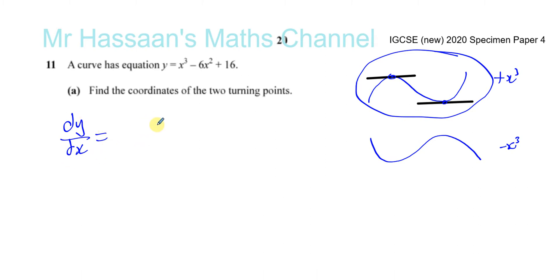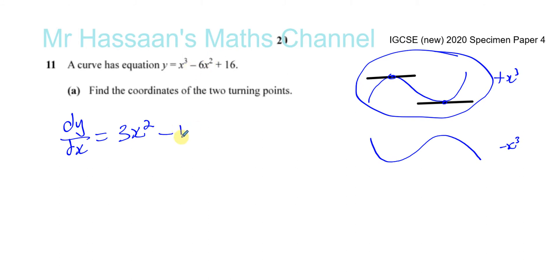When you differentiate a function, you take the power and multiply by it first. So it's three times whatever number is in front of the x — three times one gives three. You write down the x and take one from the power, so instead of three it becomes two: three x squared. For the second term, multiply by the power: two times negative six is negative twelve, and take one from the power to get x to the power of one, which you don't need to write. When you differentiate a constant, it becomes zero.